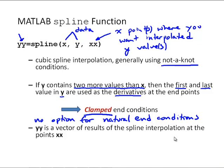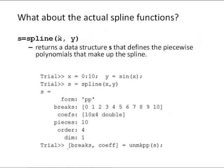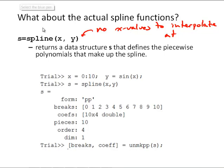But there is another way to use the built-in spline function to calculate the spline coefficients. And to do that, we just call the spline function again, but the key difference here is no x values to interpolate at. So we just give the spline function the x and y data. And again, if the y data has two more elements than the x data, those first and last values can specify derivative or clamped end conditions. So when we call this with only two inputs, the output is a data structure that defines the piecewise polynomials that make up the spline.